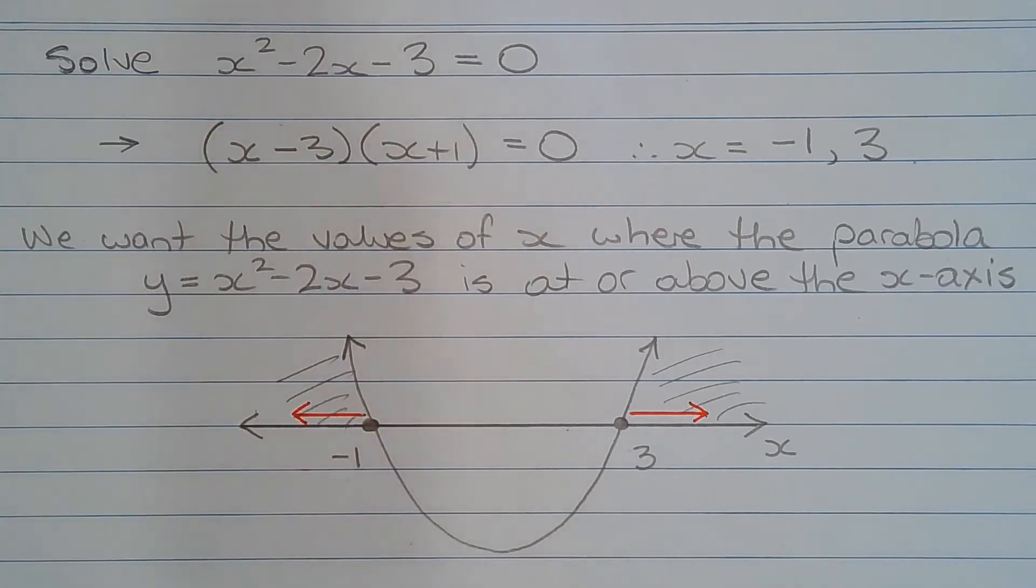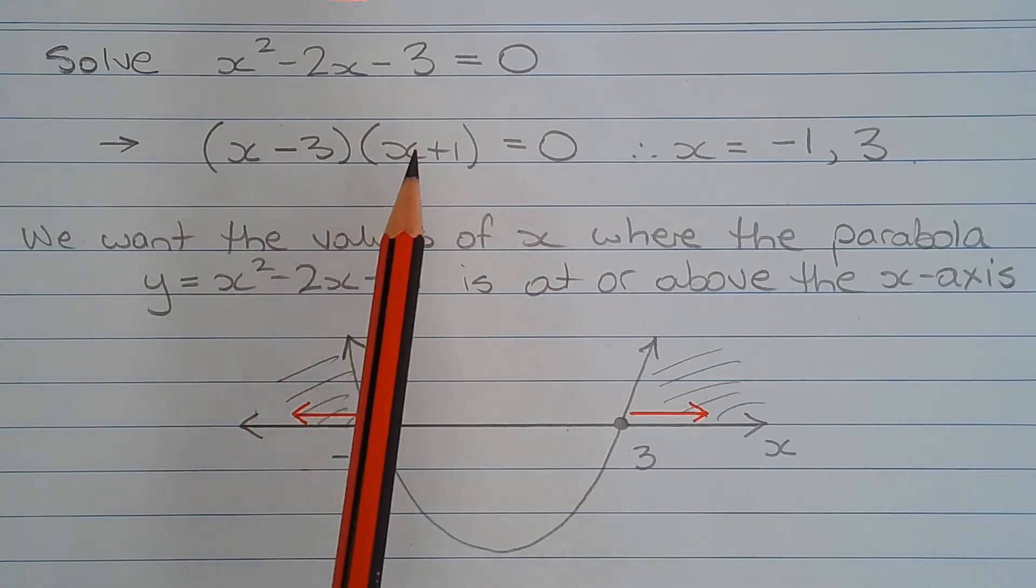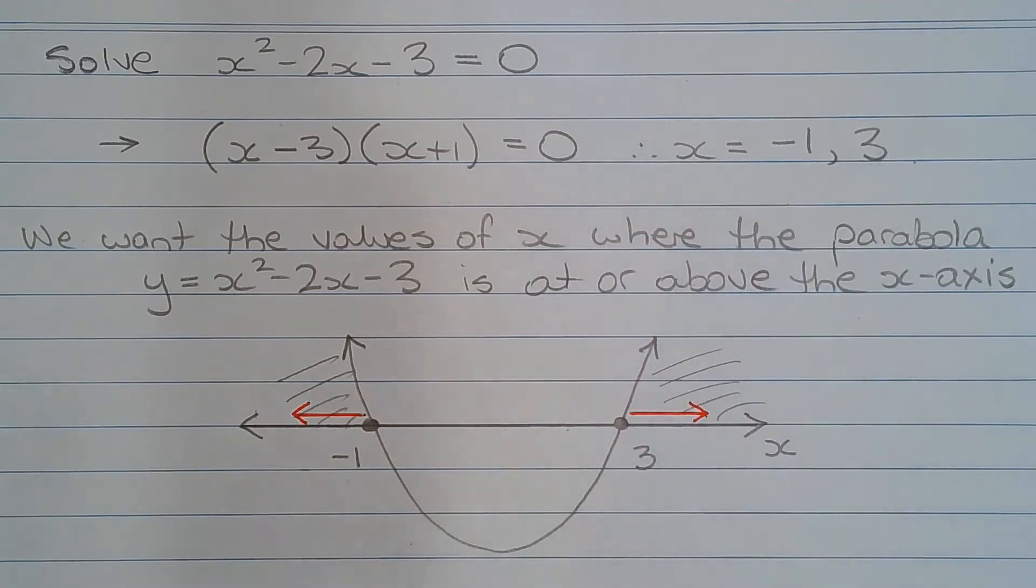Factorizing the left-hand side, we have x minus 3 in brackets multiplied by x plus 1 in brackets equals 0, so therefore x equals negative 1 or 3.